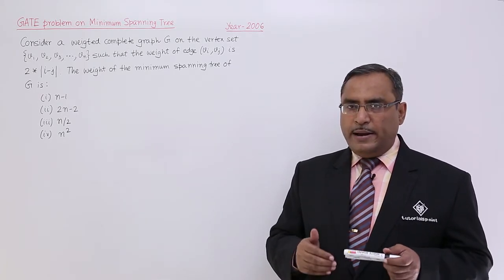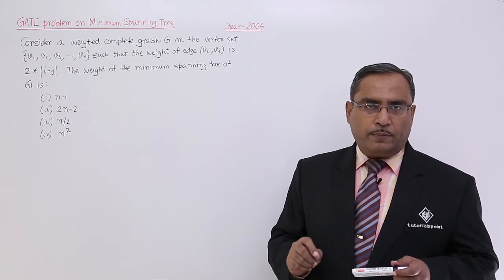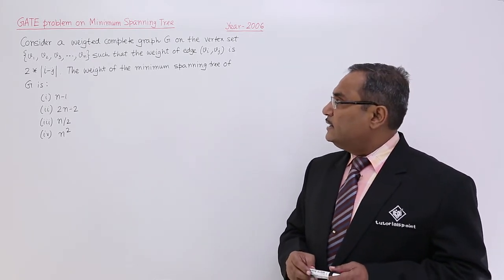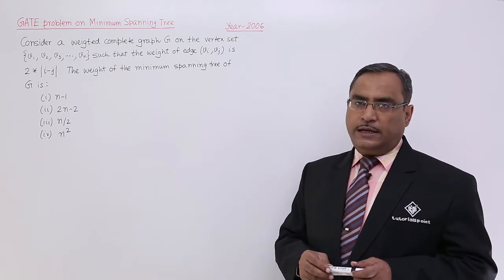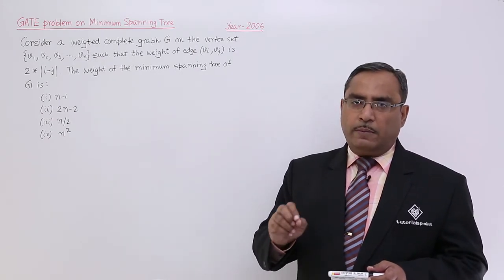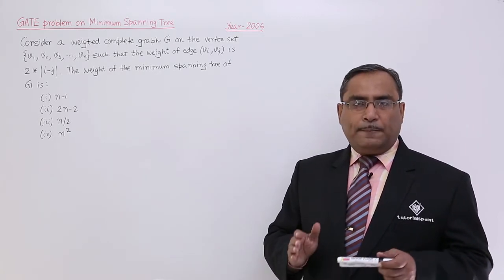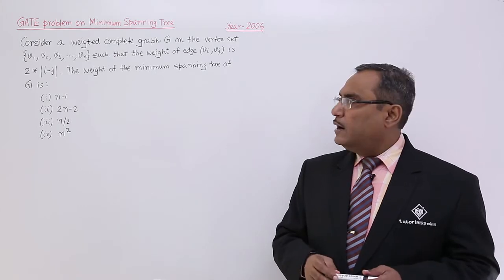To get the minimum spanning tree we require to select n-1 number of edges such that the weight of edge (Vi, Vj) - in between any pair of nodes like Vi, Vj - is 2 times the absolute value or mod of i minus j.